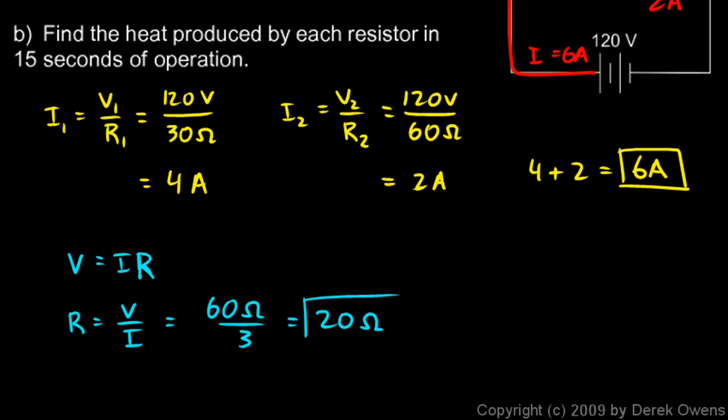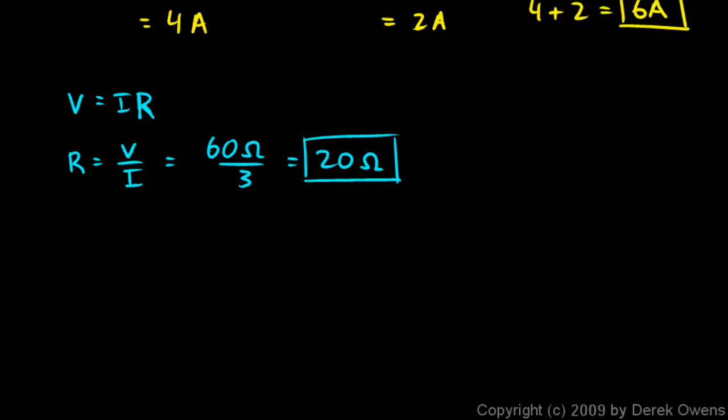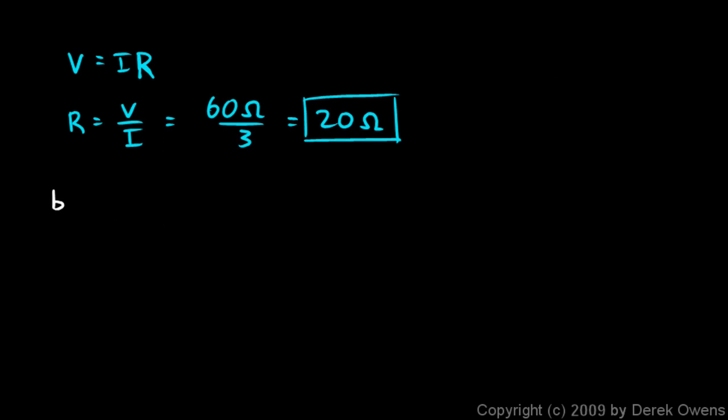Then for part B we're supposed to find the heat produced by each resistor in 15 seconds of operation. For part B we're going to use Joule's law.